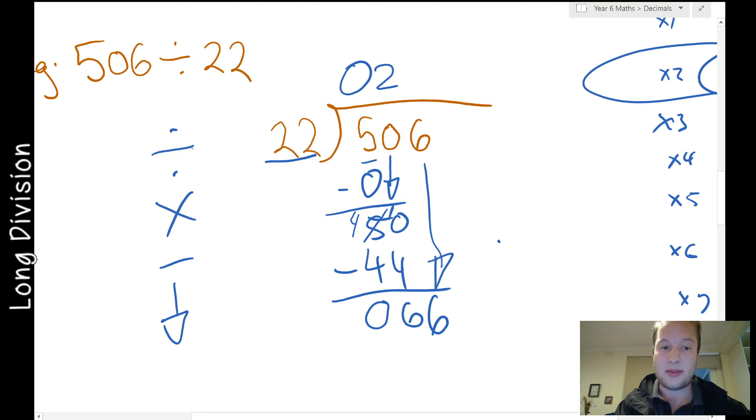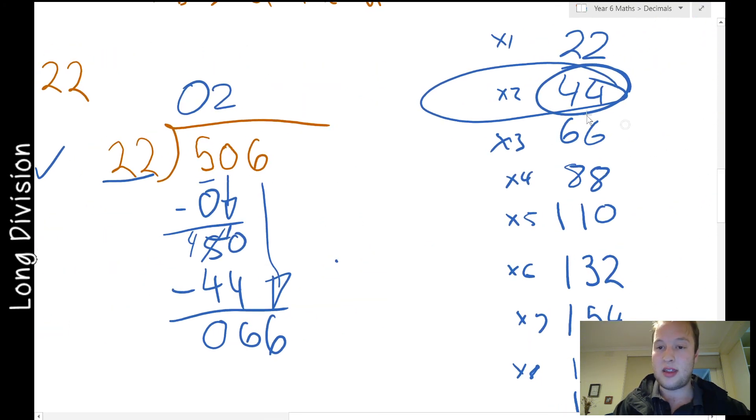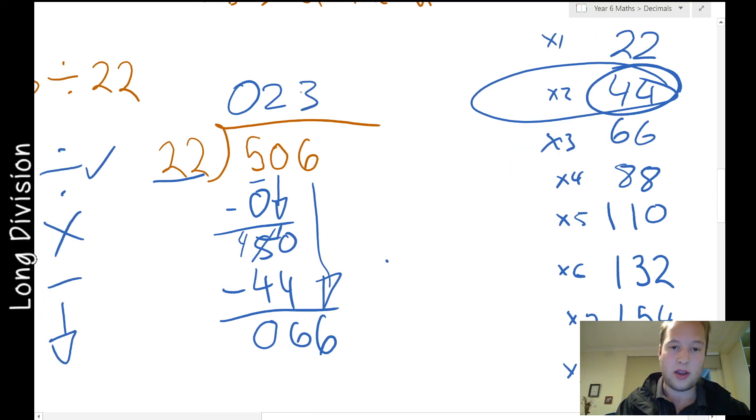Now bring down the next number and it's 66. So I start my steps again, 22 divided by 66. And we can see that was right there, three. And then how many times is 22 times 3? It's 66, it says it right there. So I work out the remainder and it's zero and there's no numbers to bring down. So I can just leave it. And that's my answer. It equals 23.